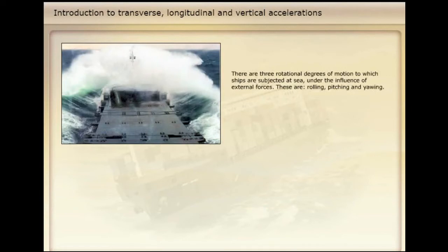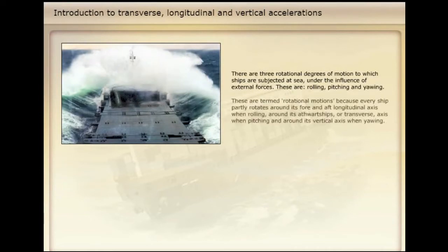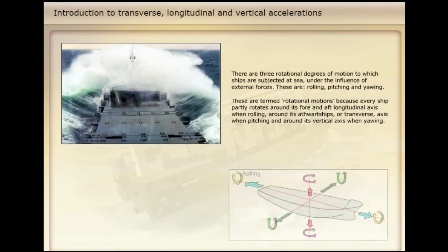There are three rotational degrees of motion to which ships are subjected at sea, under the influence of external forces. These are rolling, pitching, and yawing. These are termed rotational motions because every ship partly rotates around its fore and aft longitudinal axis when rolling, around its athwartships or transverse axis when pitching, and around its vertical axis when yawing.